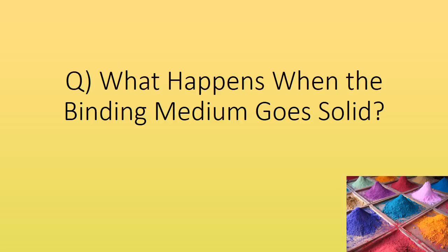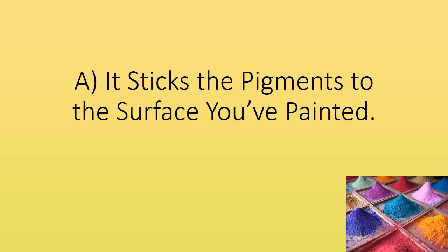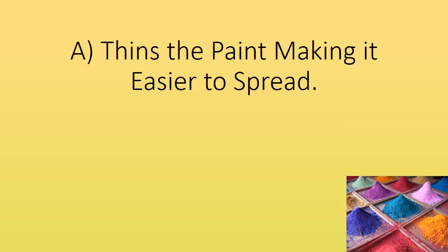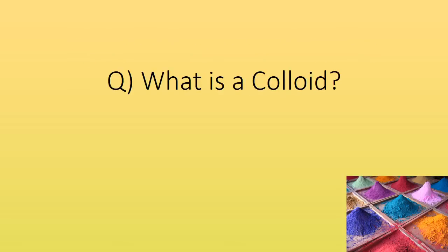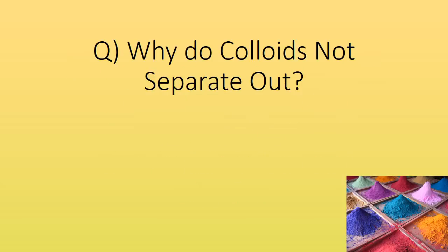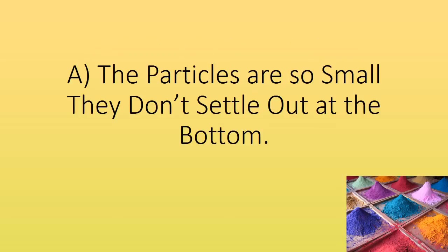What happens when the binding medium goes solid? It sticks the pigment to the surface you've painted. What does the solvent do? Thins the paint making it easier to spread. What is a colloid? Tiny particles of one kind of stuff dispersed in another kind of stuff — they're mixed but not dissolved. Why do colloids not separate out? The particles are so small they don't settle out at the bottom.